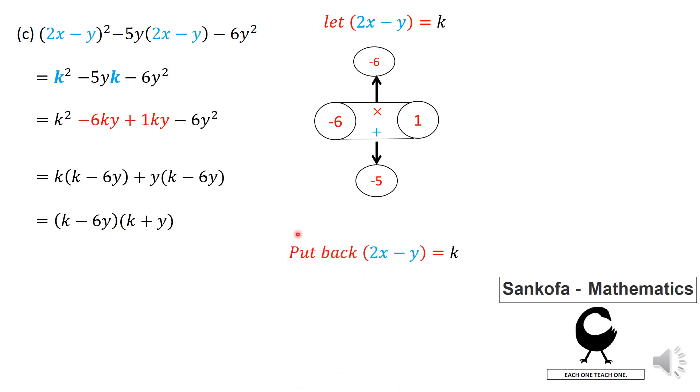So you have to put that 2x minus y back where you have the k. So from this instance, everywhere you have the k, you replace it with 2x minus y as a data here in the first place and also in the other bracket. So eventually our final answer should be the quantity 2x minus y minus 6 and the quantity 2x minus y plus y.